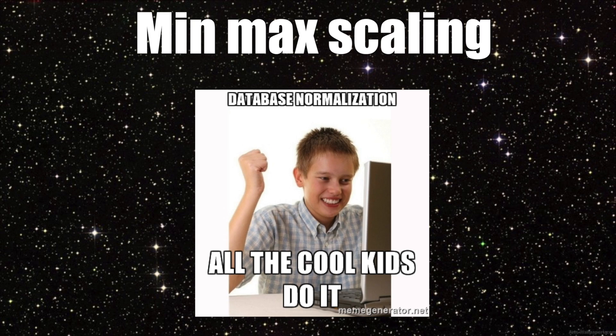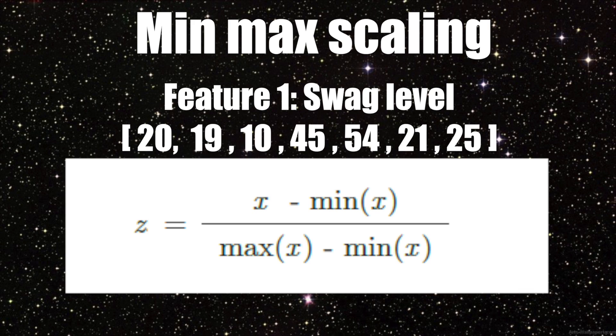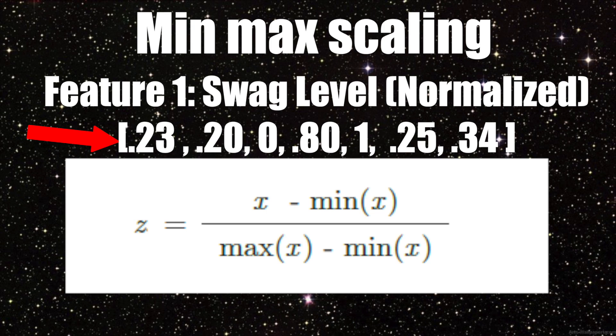There are several strategies to normalize data, although a popular one is called min-max scaling. If we have some given data, we can use the following equation to normalize it. We take each value in the list and subtract the minimum value from it, then divide that result by the maximum value minus the min value. We then have a new list of data within the range of 0 to 1, and we do this for every feature we have so they're all on the same scale.